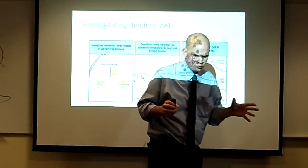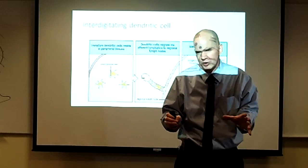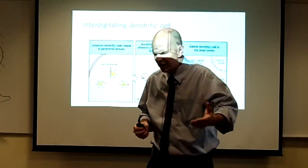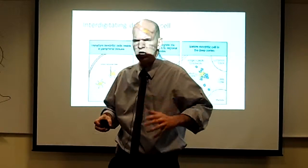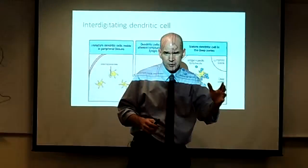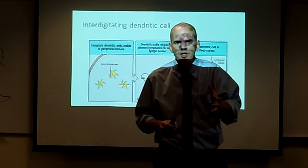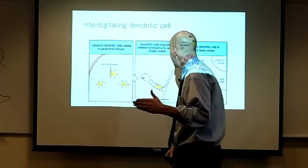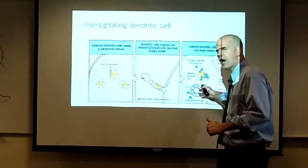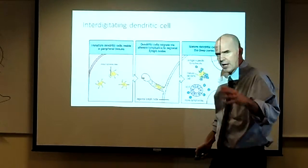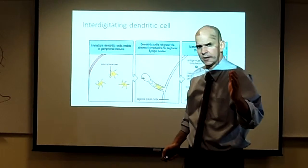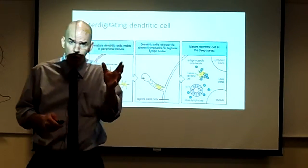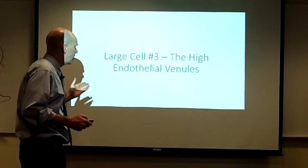Now these interdigitating dendritic cells, after they establish themselves in the pericortex, they express cytokines and chemokines saying, the pathogens are coming, the pathogens are coming. These cytokines and chemokines spread throughout the pericortex. Some cytokines find their way over to high endothelial venules. And this activates the high endothelial venules. High endothelial venules then become our third large cell of the lymph node.